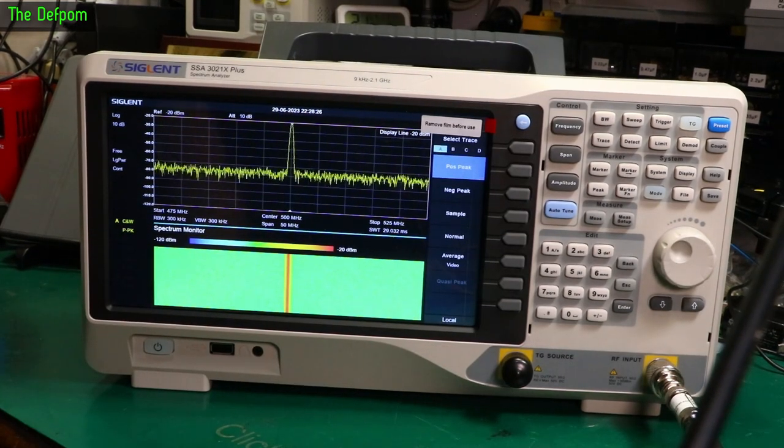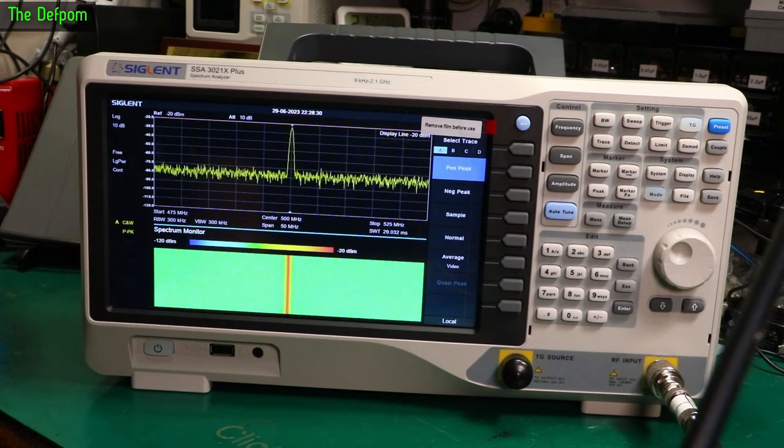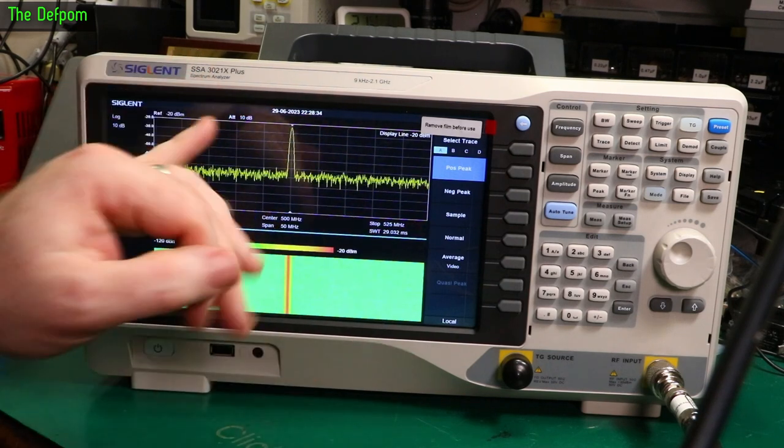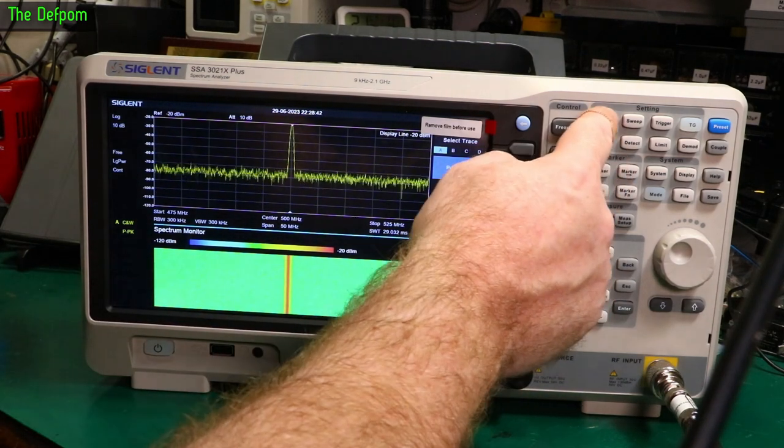So I just hooked up my Marconi 2022D RF signal generator. I set it to 500 megahertz, and I've just adjusted this to be 500 megahertz. You can see the waterfall diagram here showing the bandwidth and stuff there, the actual usage. So let's have a bit of a play around with this thing, shall we?